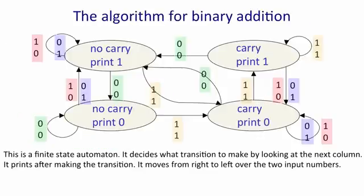This is a picture of the algorithm for binary addition. The states shown here are like the states in a hidden Markov model, except that they're not really hidden. The system is in one state at a time. When it enters a state, it performs an action. So it either prints a one or prints a zero.